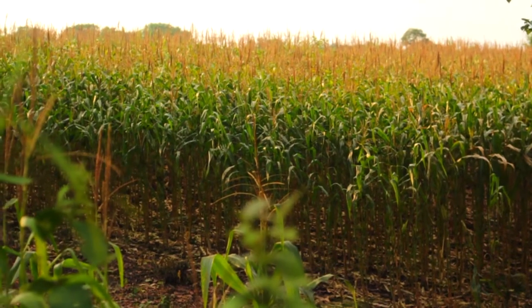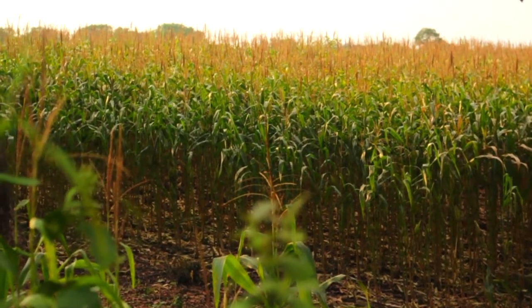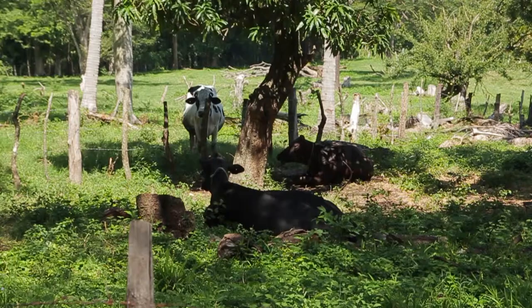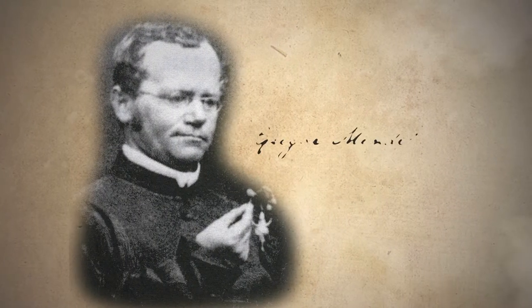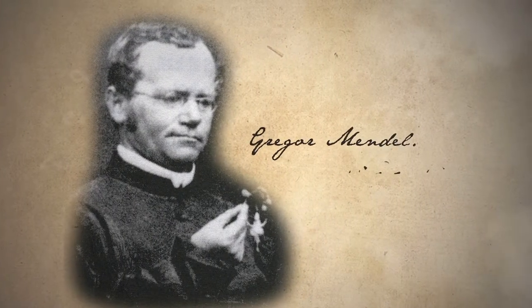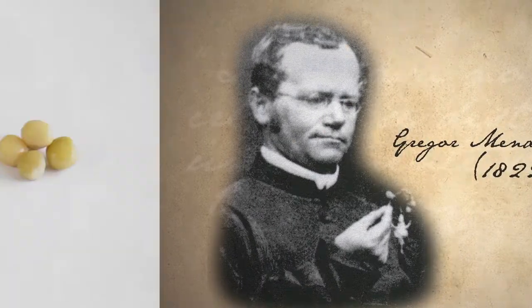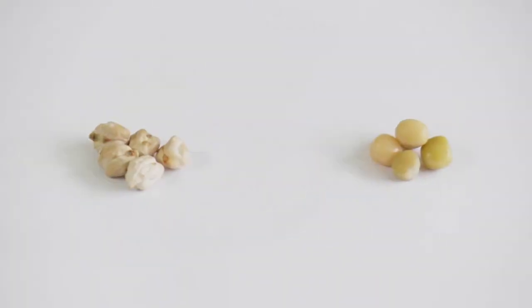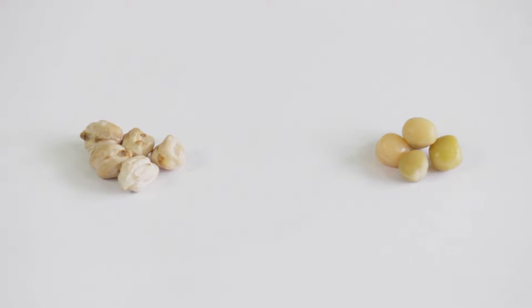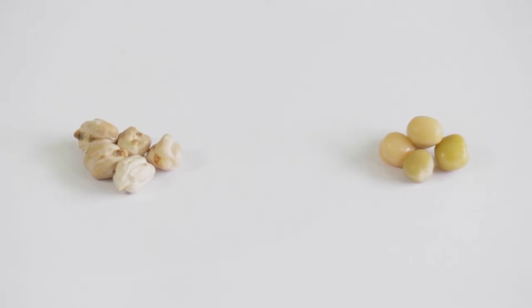Produciendo especies vegetales y animales con características deseables para los agricultores. En el siglo XIX, el descubrimiento del naturalista Gregor Mendel acerca de las bases de la herencia, experimentando con plantas de guisantes, fue uno de los acontecimientos más grandes para la genética.